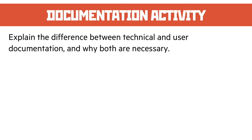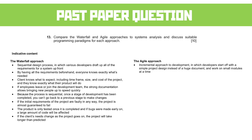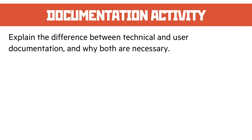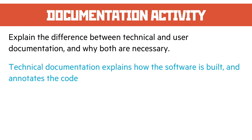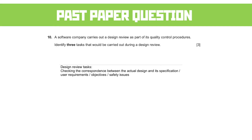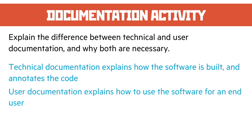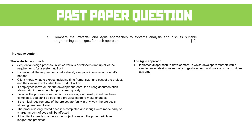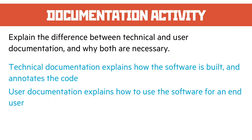The documentation activity asks us to explain the difference between technical and user documentation and why both are necessary. Technical documentation explains how the software is built and could involve annotating the code — it explains how the software actually works. User documentation explains how to use the software and is written at the technical level of the end user. If you're building software for other developers it can be quite technical, but for non-specialist users it could be completely non-technical.